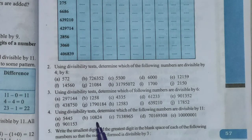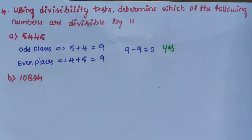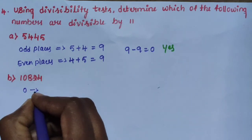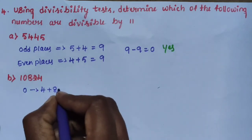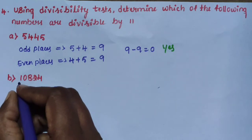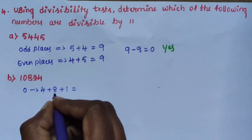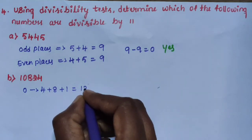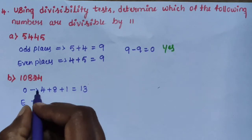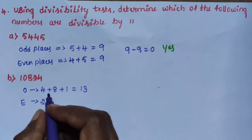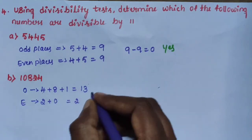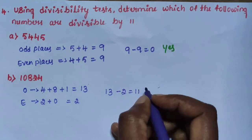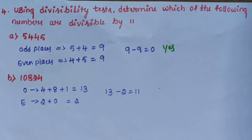Sub question B: 10,824. Sum of digits at odd and even places. Odd places: 4 plus 8 plus 1 equals 13. Even places: 2 plus 0 equals 2. Difference: 13 minus 2 equals 11. Since the difference is 11, the number 10,824 is divisible by 11. Yes.